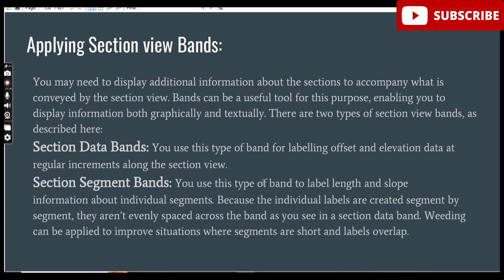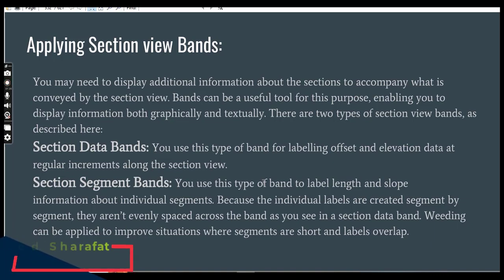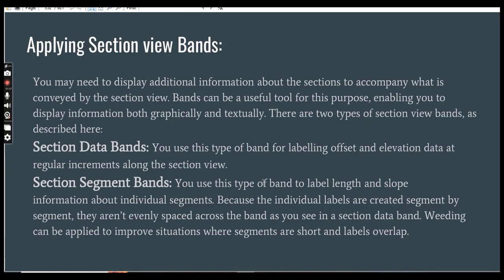There are two types of section view bands. Type 1: Section Data bands — we use this type for labeling offset and elevation data at regular increments along the section view. Type 2: Section Segment bands — we use this type to enable length and slope information about individual segments in a section view. Because individual labels are created segment by segment, they are not evenly spaced across the band.